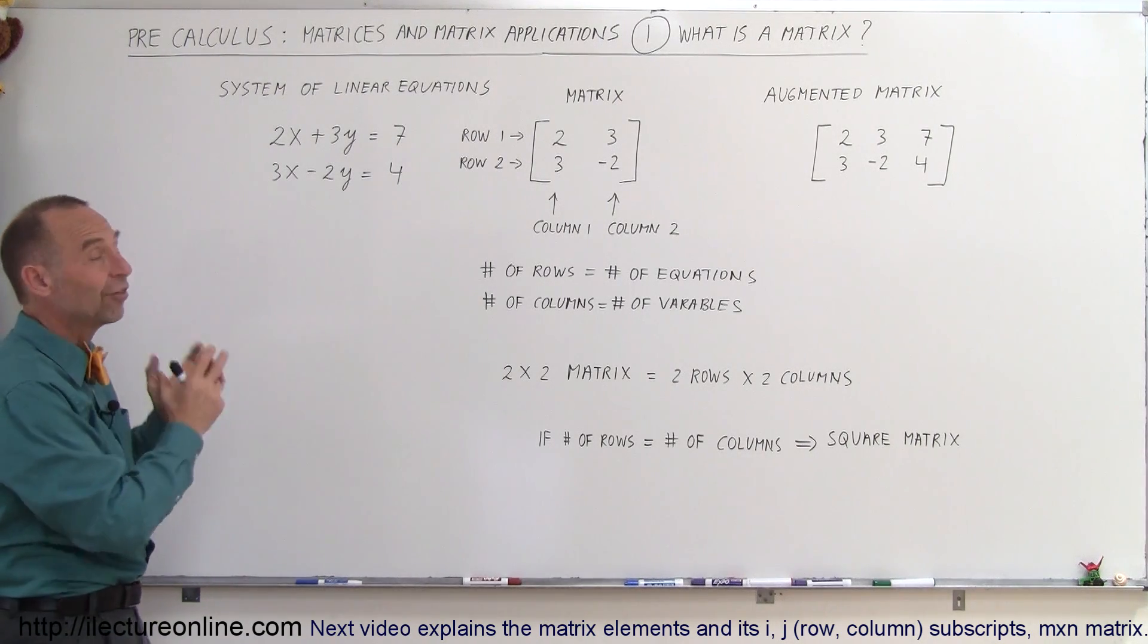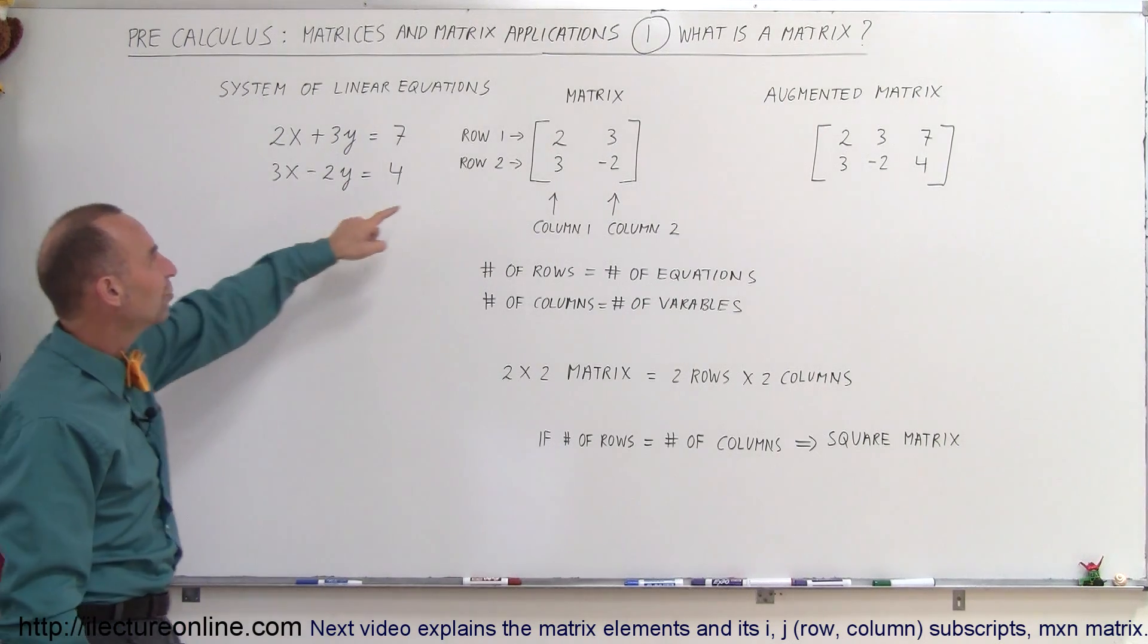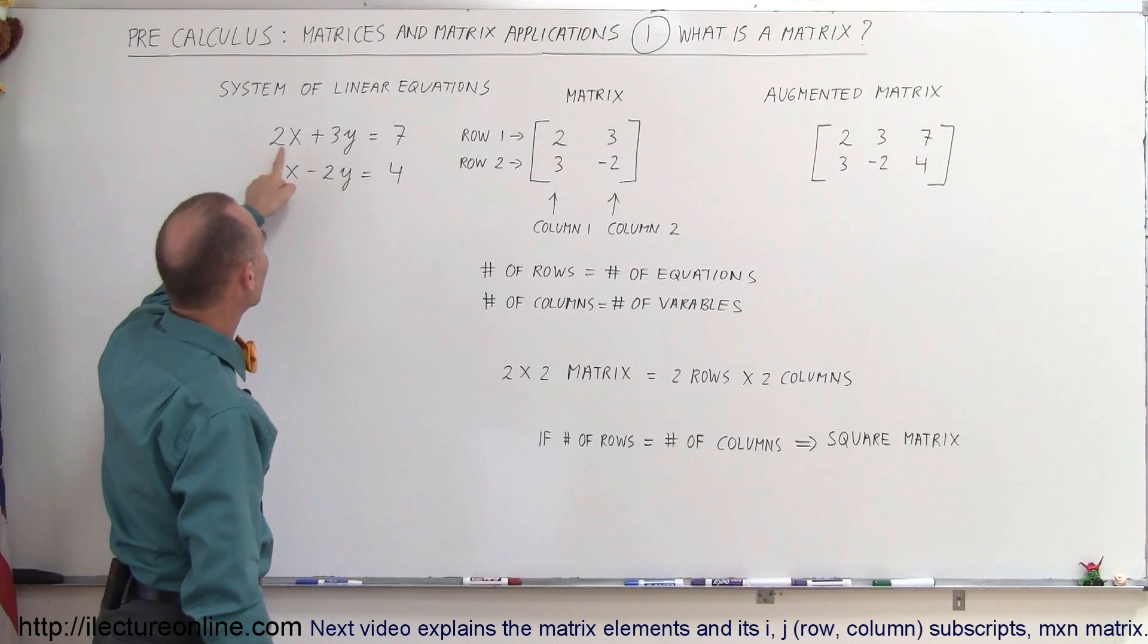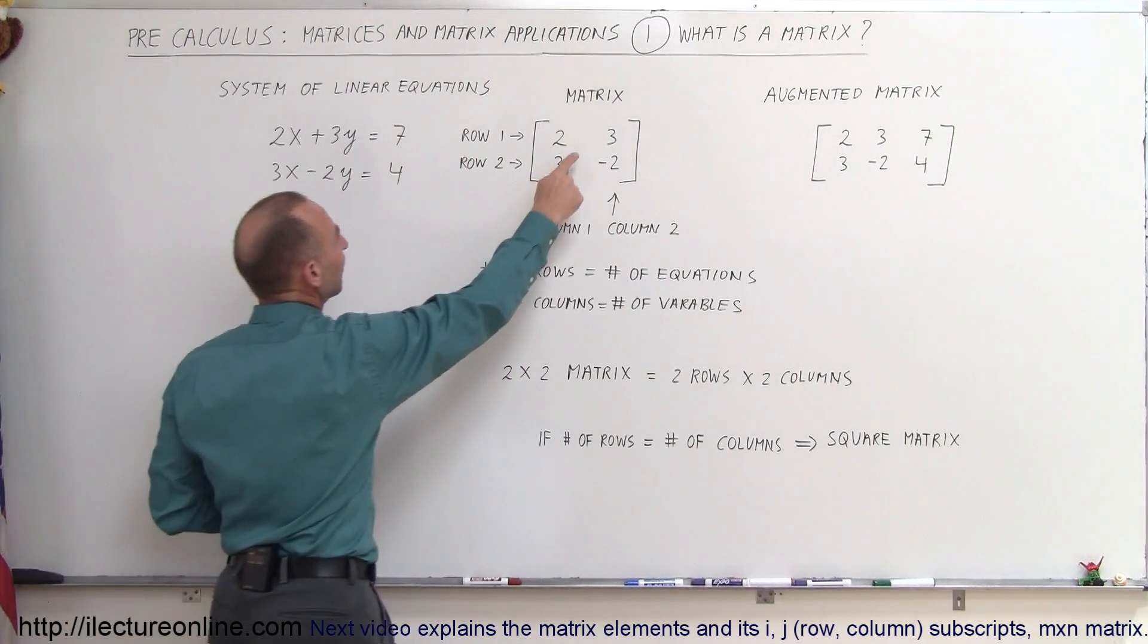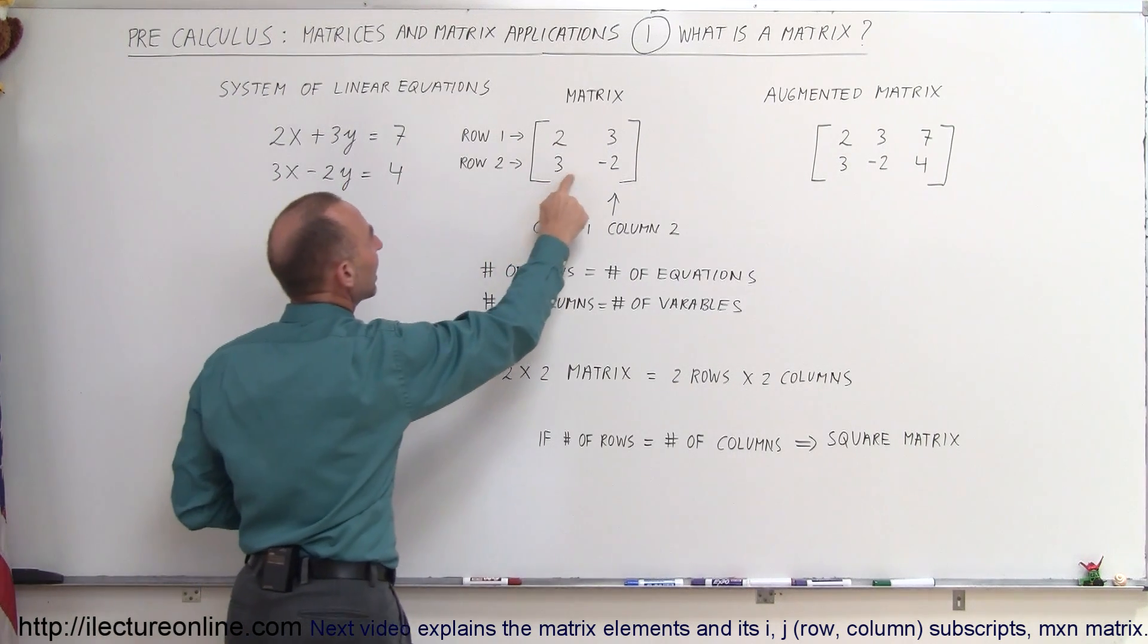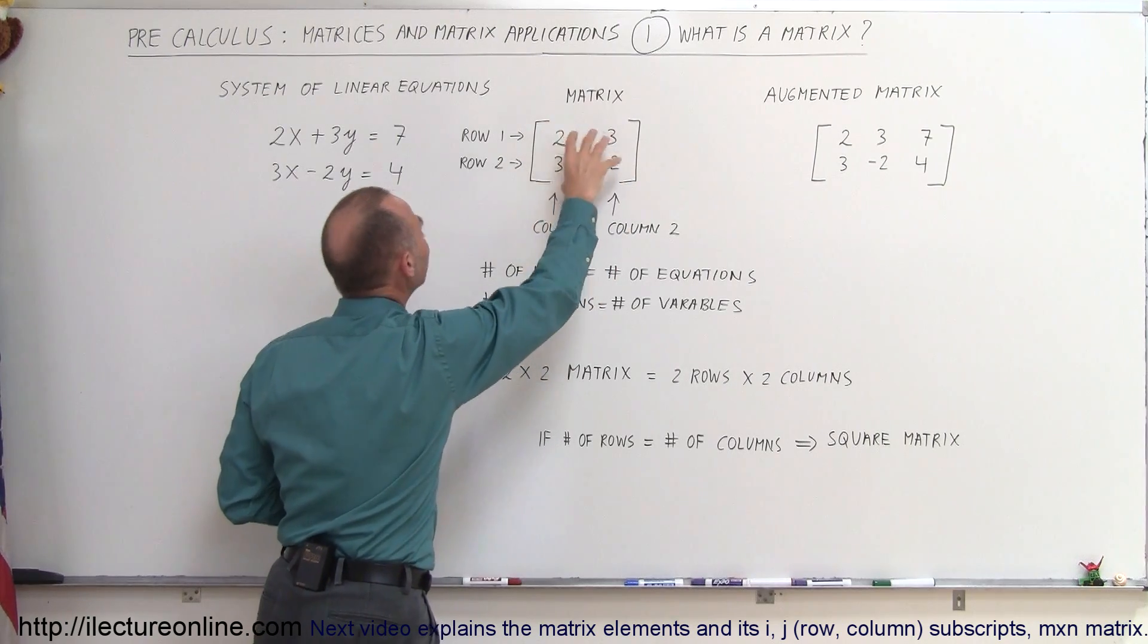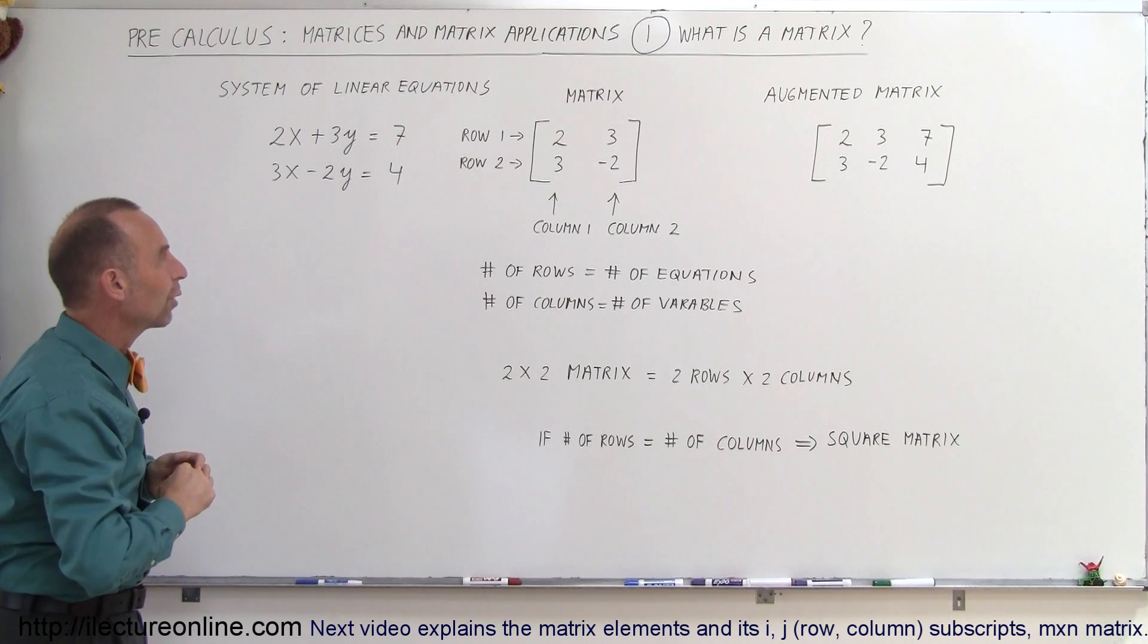Matrices can be used to do the very same thing. In this particular case, this matrix here has the numbers which are equal to the coefficients of the two variables x and y. We have 2x plus 3y, and here we have the 2 and 3. Here we have 3x minus 2y, we have 3 and a minus 2. So this matrix has in it the coefficients of the x and y variables in the system of linear equations.